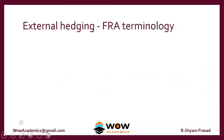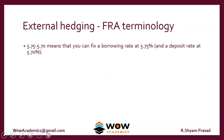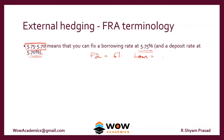Regarding FRA terminology: if they give you a quote like 5.75 to 5.70, it means you can borrow at 5.75% and invest at 5.70%. The borrowing rate is always higher than the investing rate, similar to bank deposits and loans — a bank FD might be 6% while a loan is 12%.